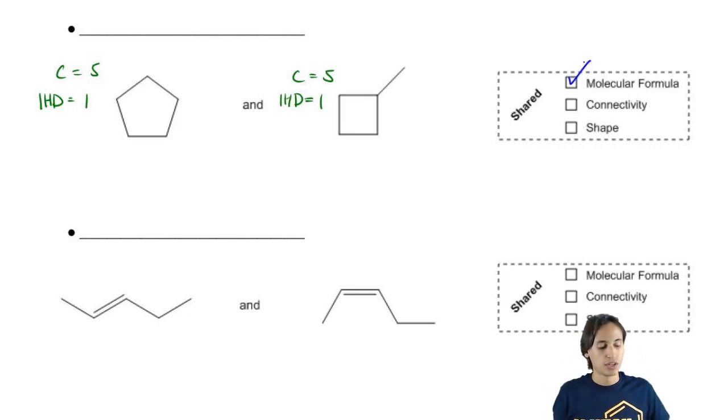The answer is no because in one of these I have a five-membered ring and in the other one I have a four-membered ring. What that means is that these have different shapes and not just shapes. These have different connectivities.